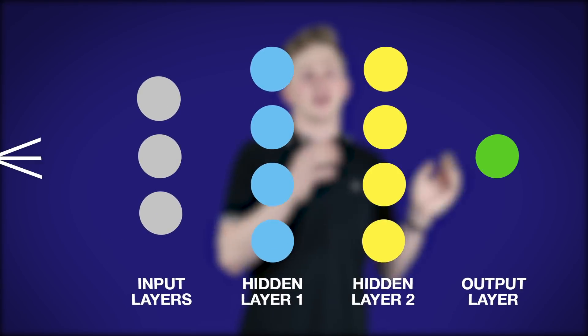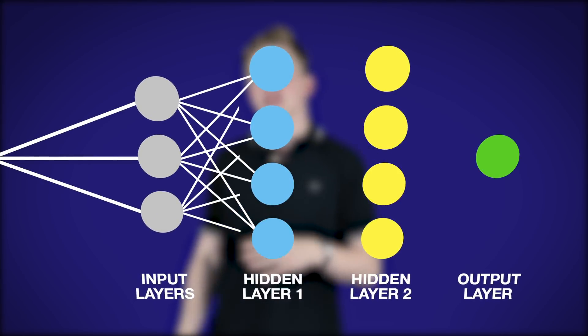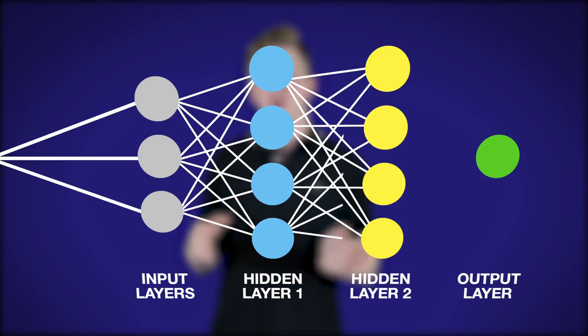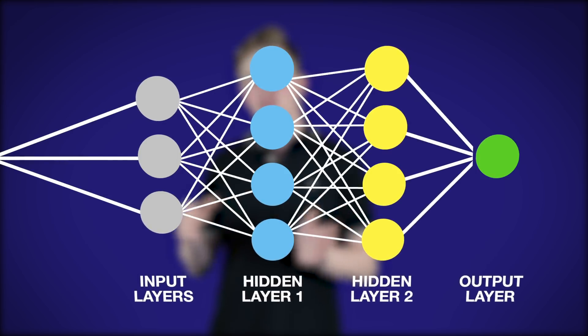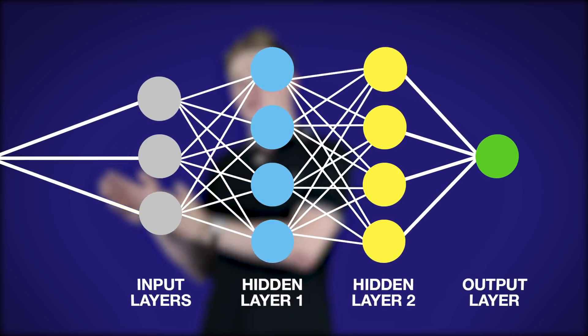An artificial neural network is a system based on the operation of biological neural networks — an emulation of a biological neural system. Artificial neural networks are one of the main tools for a machine to learn things, and in some way they replicate the processes that work in the human brain, but are much simpler. ANNs consist of input layers and output layers as well as hidden layers that transform the input into something the output layers can use. ANNs aren't created to perform algorithms — they are created to learn.